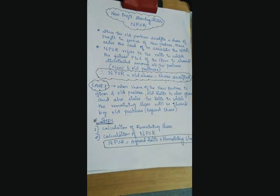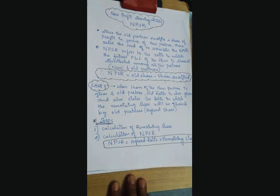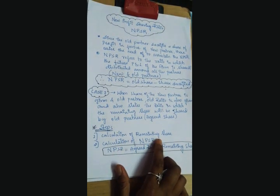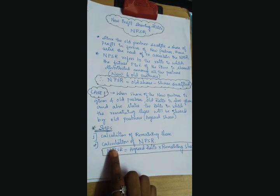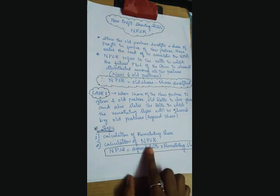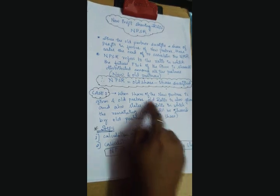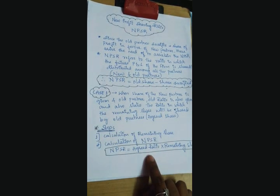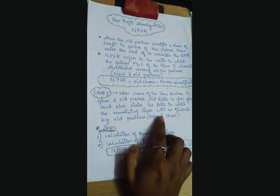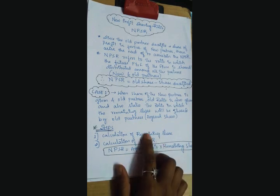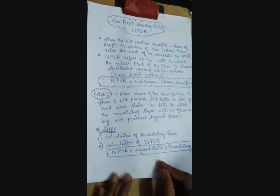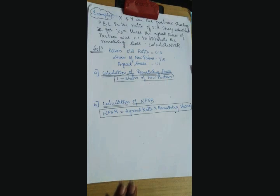Coming to the steps now — how we are going to calculate the first case. First, we have to calculate the remaining share, which is 1 minus the share of the new partner, as calculated in the previous case of sacrifice ratio. The second step is the calculation of the new profit sharing ratio. The agreed ratio will be given in the problem, and the remaining share we are going to calculate.